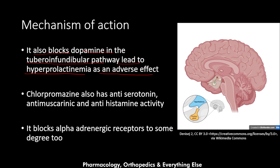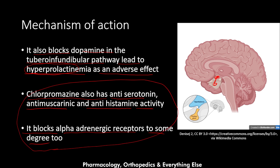Chlorpromazine also blocks dopamine in the tuberoinfundibular pathway, which leads to hyperprolactinemia as an adverse effect. This pathway connects the hypothalamus with the pituitary and controls prolactin levels; when dopamine is blocked here, prolactin increases. Additionally, chlorpromazine has anti-serotonin, anti-muscarinic, and antihistamine activity, and it also blocks alpha-adrenergic receptors to some degree. These actions lead to side effects discussed in the adverse effects section.